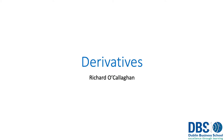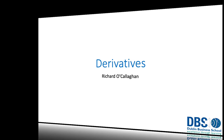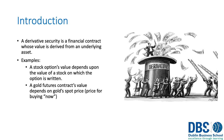Welcome to this quick recap of derivatives. A derivative is a security or financial contract whose value is derived from a separate underlying asset. For example, if you have a stock and also have an option on the purchase of that stock, then the value of the option is drawn from the value of the stock.